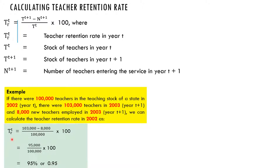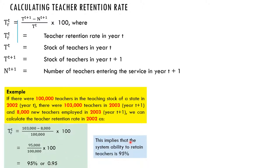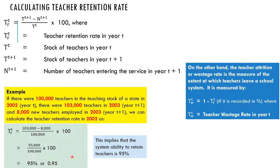Bringing in the formula, we have T^(t+1) which is 103,000 teachers, minus N^(t+1), the new teachers employed, which is 8,000, over T^t which is 100,000 teachers, times 100. That gives us 95,000 over 100,000 times 100, which equals 95 percent or 0.95. This implies that the system's ability to retain teachers is 95 percent, which is high, but can be improved upon.